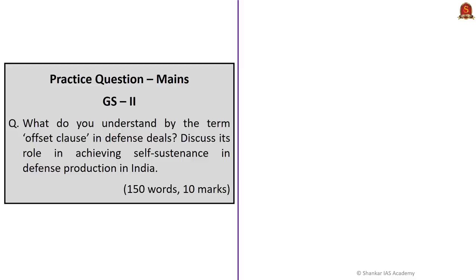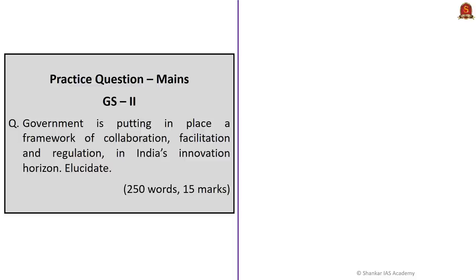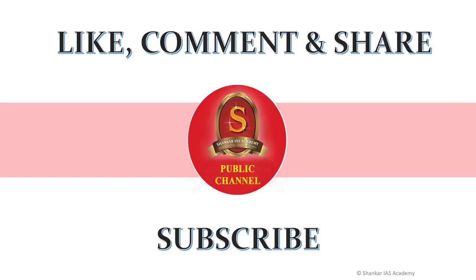Let us take mains questions. Question one: What do you understand by the term offset clause in defense deals? Discuss its role in achieving self-sustenance in defense production in India. This is a 10-mark question with a 150-word limit. Question two: Government is putting in place a framework for collaboration, facilitation, and regulation in India's innovation horizon. Elucidate. This is a 15-mark question with a 250-word limit. Write the answers and post them in the comment section. With this, we conclude today's news analysis. If you find this session resourceful, click the like button and subscribe to our YouTube channel.